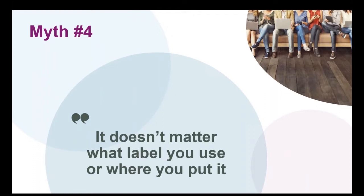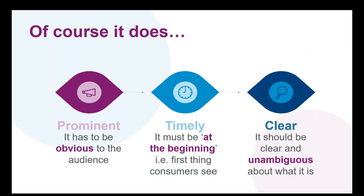That brings us to myth four: that it doesn't matter what label you use or where you put it. Of course it does. The main thing to remember is that you need to make it obvious. Any label or other means you use needs to be prominent — meaning it has to be obvious to the audience — timely, meaning up front before people click or engage, and suitable for all potential devices. Burying the label in a sea of hashtags or putting it where it can only be seen by clicking 'see more' just isn't going to cut it. It needs to be clear and unambiguous about what it is.